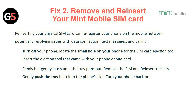Turn off your phone. Locate the small hole on your phone for the SIM card ejection tool. Insert the ejection tool that came with your phone or SIM card. Firmly but gently push until the tray pops out. Remove the SIM and reinsert the SIM. Gently push the tray back into the phone slot and turn your phone back on.